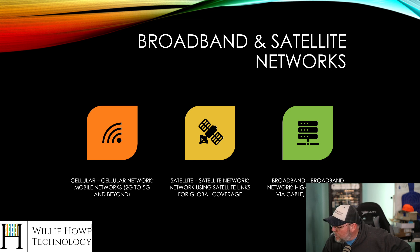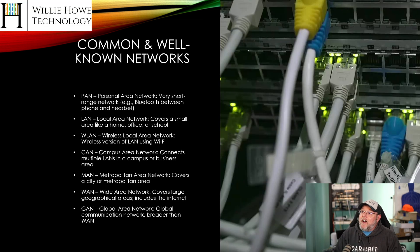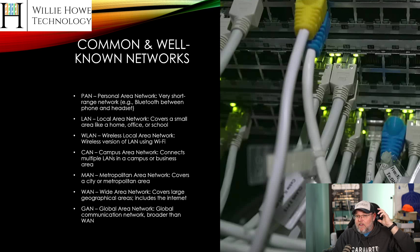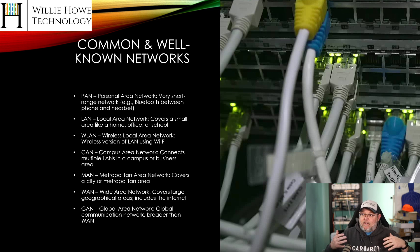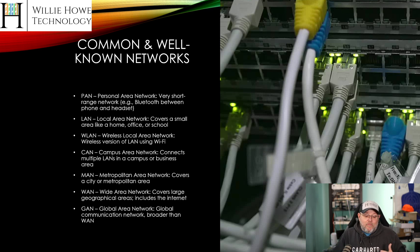The next section covers common and well-known networks. You have a PAN, which is a personal area network — very short range. Think about your watch, your earbuds, a headset, or any other Bluetooth device that connects. Bluetooth is going to be the most common protocol for personal area networks. Medical devices that people wear can also be Bluetooth. So you have a network on you all the time, and then it's connected to the cellular network, and maybe you're connected to Wi-Fi.